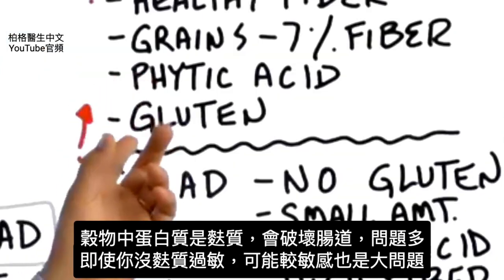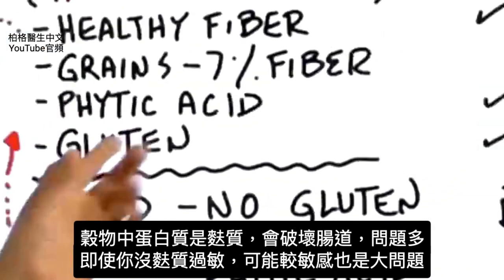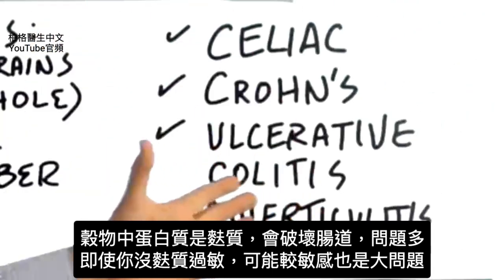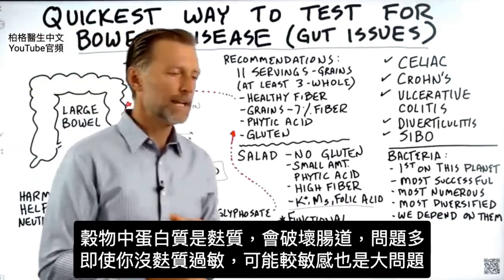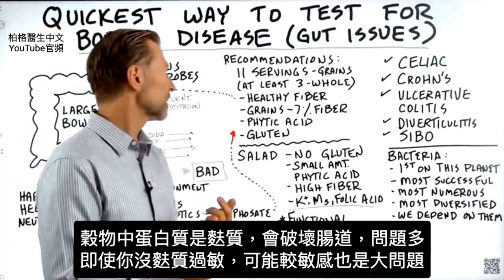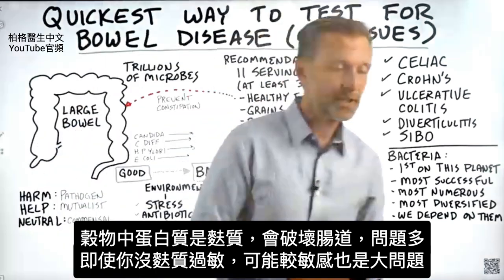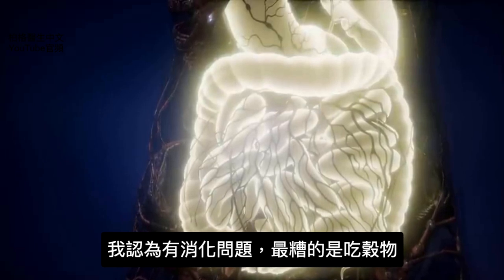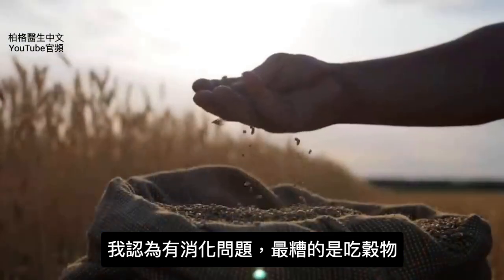Then we have the protein in grains, which is gluten, which literally tears up the digestive tract and creates so many problems. Even if you don't have a gluten allergy, it could be a gluten sensitivity. That's a really big factor. Honestly, I think the worst thing you could possibly eat for digestive problems is grains.